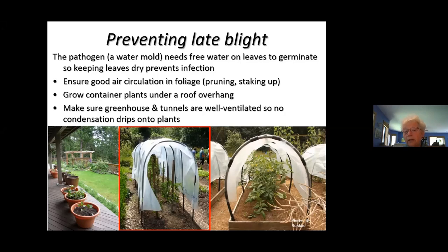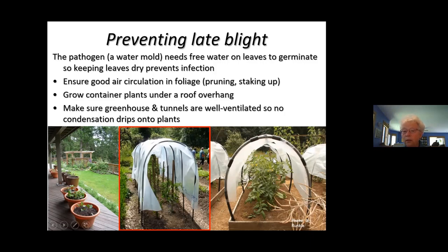People have built high tunnels and found that these tunnels aren't really keeping tomatoes warm — they're just keeping them dry — with big openings making sure there's no condensation at night dropping down on the tomatoes. Or if you've got tomatoes in pots and can grow them along an overhang of a roof, they get plenty of light and sun and won't get wet, and they can do very well.